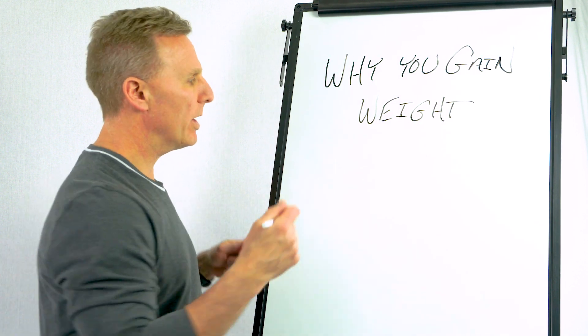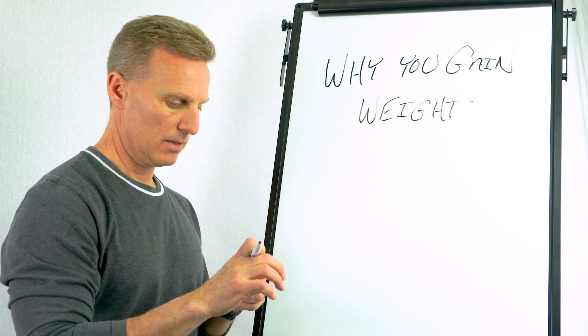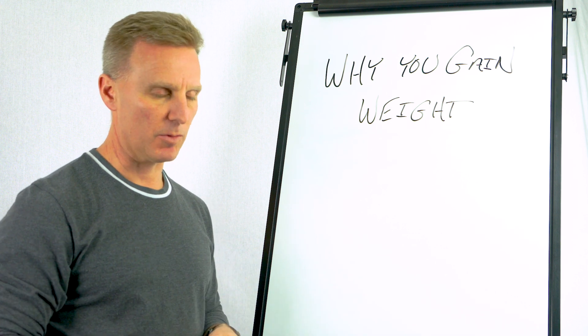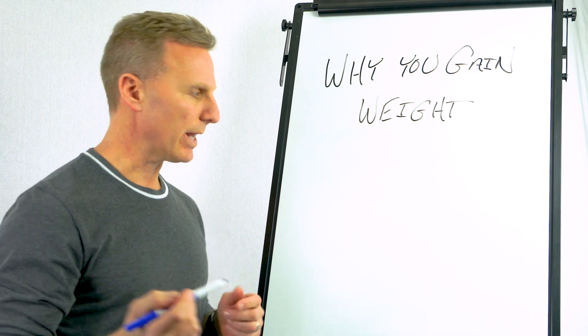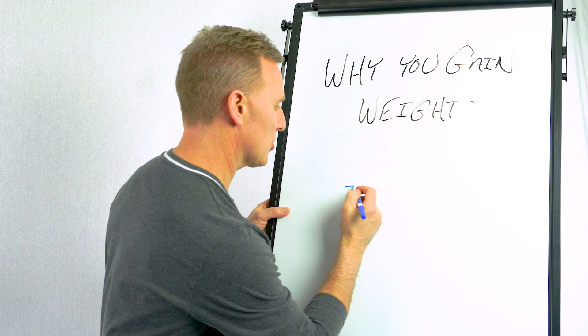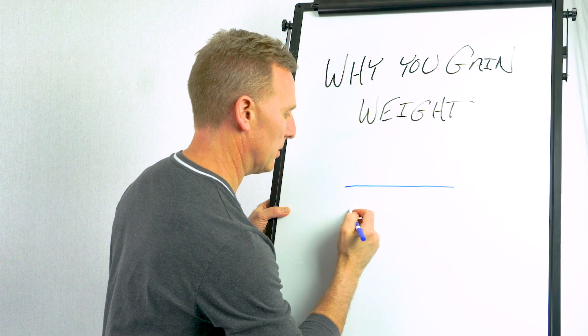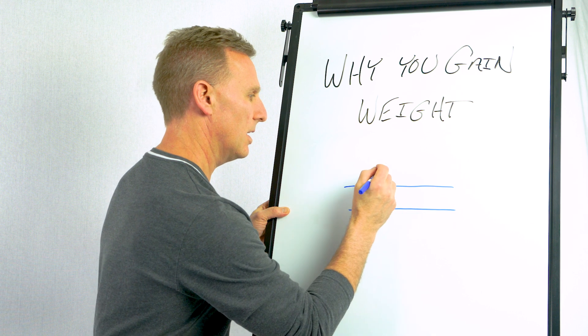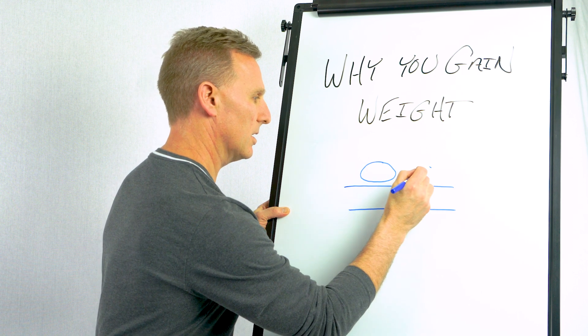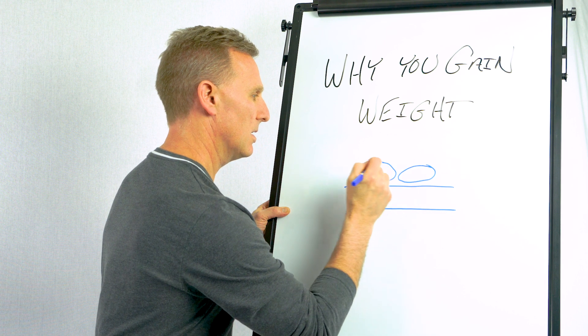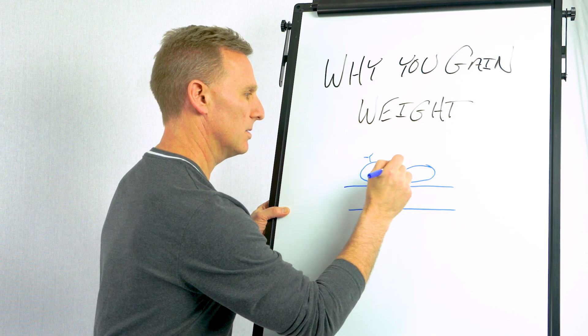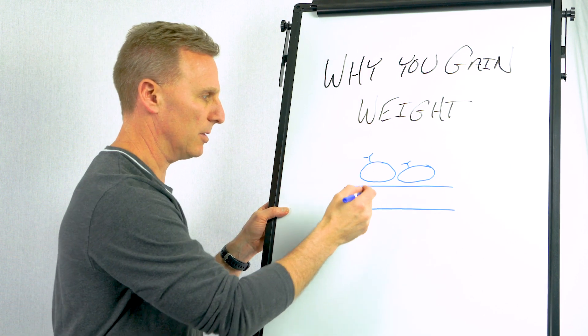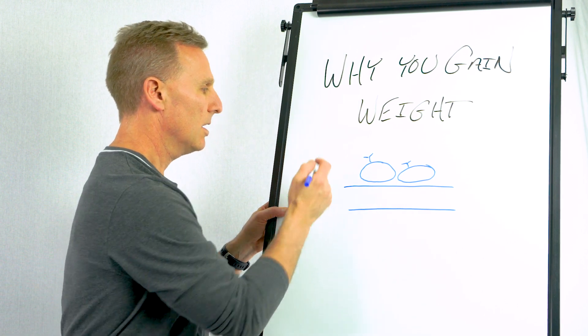So when somebody eats, I'm just picking on pizza, but when somebody eats a food that's higher in carbohydrate, we have to understand what happens to that. So I'm just going to draw a very simple cartoon. And we're going to pretend that's a blood vessel. And right next to this blood vessel are going to be a couple cells. So it's a really small blood vessel that's called a capillary, and it's where exchanges occur between what's going on in the blood and what's happening in the cell.